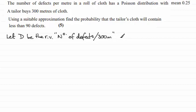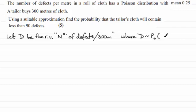Now we're told that the number of defects follows a Poisson distribution with a mean of 0.25 every 1 metre. So for 300 metres, D would be distributed as a Poisson distribution, but the mean will be 300 times 0.25. If you do 300 times 0.25, you get 75 — so a mean of 75 defects per 300 metres.